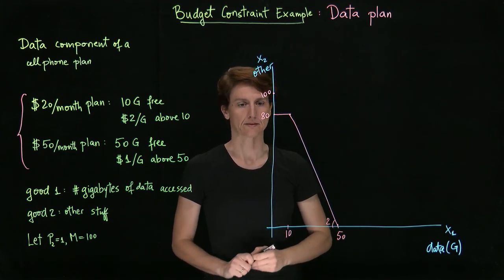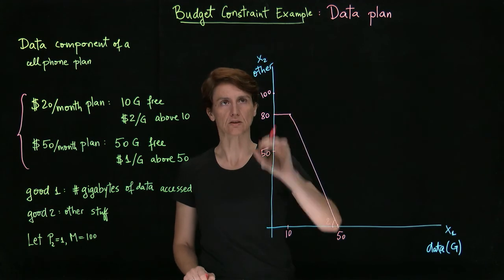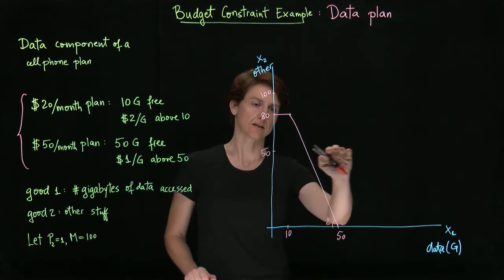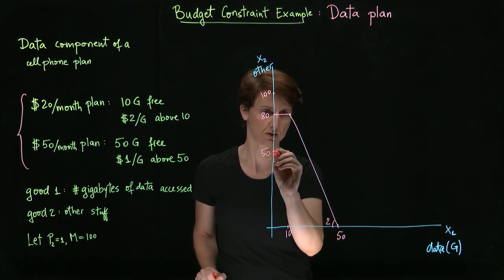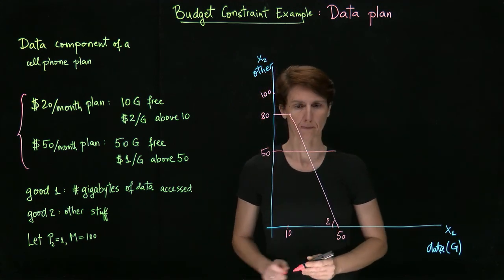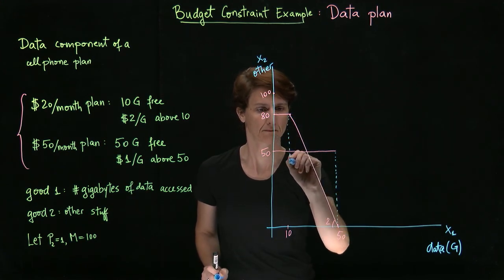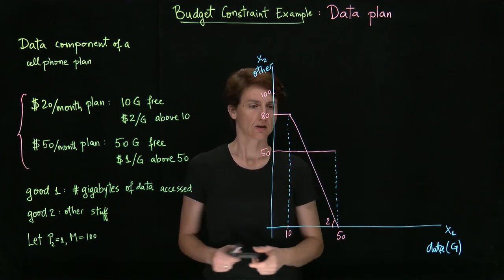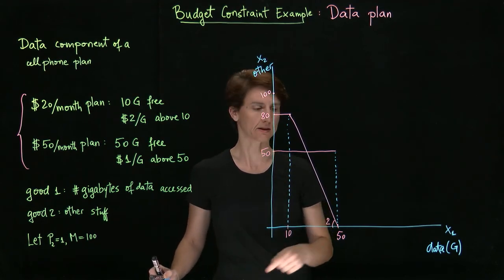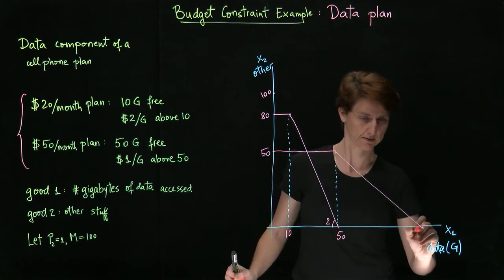What about the fifty dollar a month plan? If we buy that one, then we'll only have fifty dollars left cash. So that's the most we can spend on other things. However, now we have more data included for free. So as we consume more, we can get all the way up to fifty without being charged an addition. Beyond this point, we again have to pay for our data use. How much can we buy at most? Well, with fifty dollars and a dollar per gigabyte, we can buy another fifty. So that means we will be able to consume at most a hundred gigabytes of data. And the slope here is one.